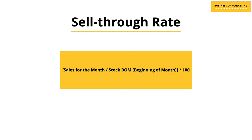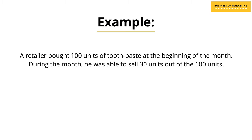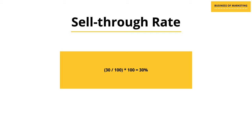The calculation of sell through rate is extremely simple. By dividing the sales for the month by the stock at the beginning of the month and multiplying by 100, you get the sell through rate. For example, a retailer bought 100 units of toothpaste at the beginning of the month. During the month he was able to sell 30 units. Therefore, the sell through rate is 30 divided by 100, multiplied by 100, which equals 30%. That is his sell through rate.